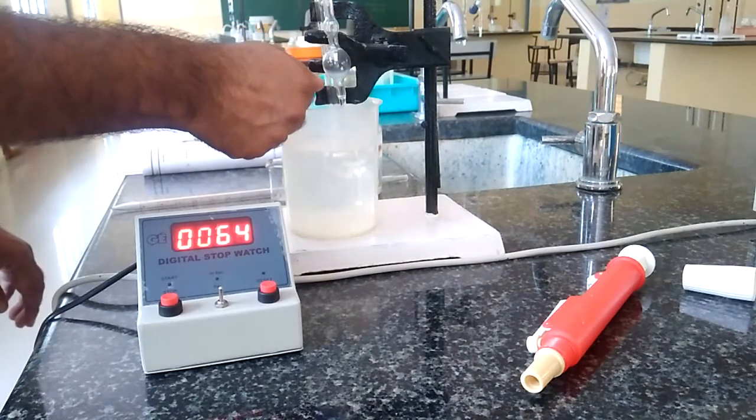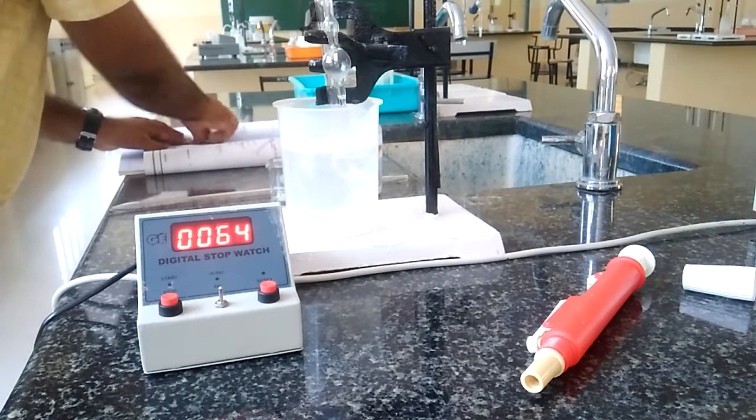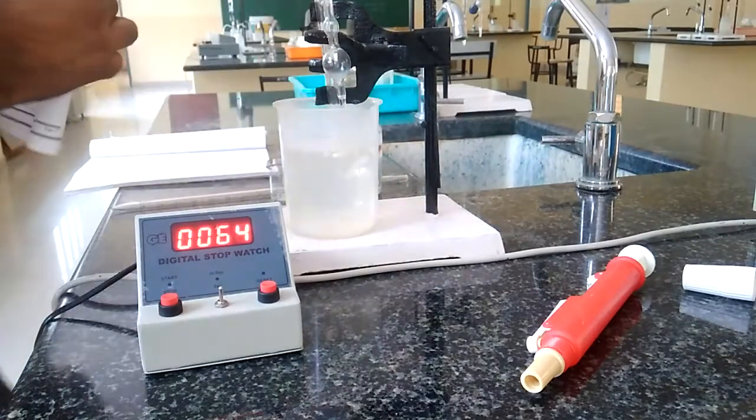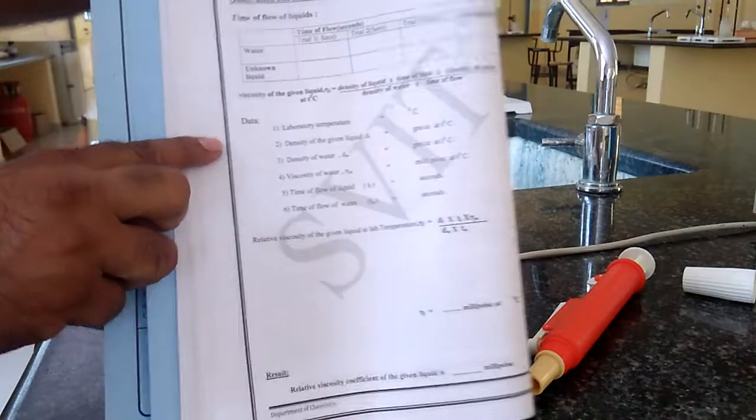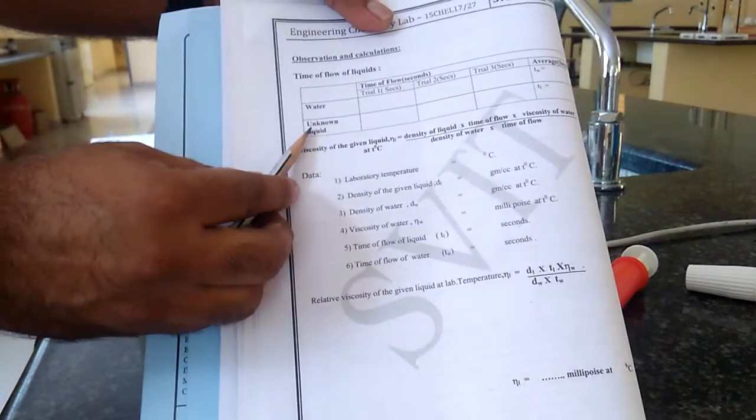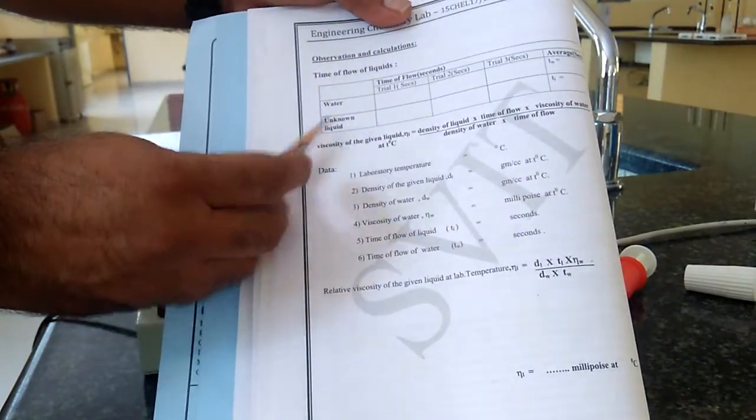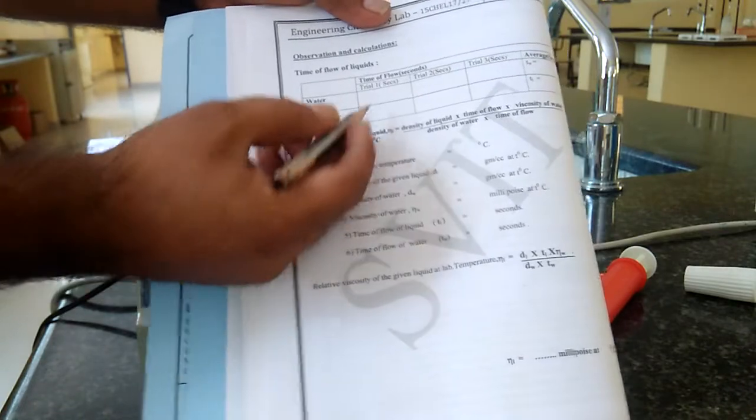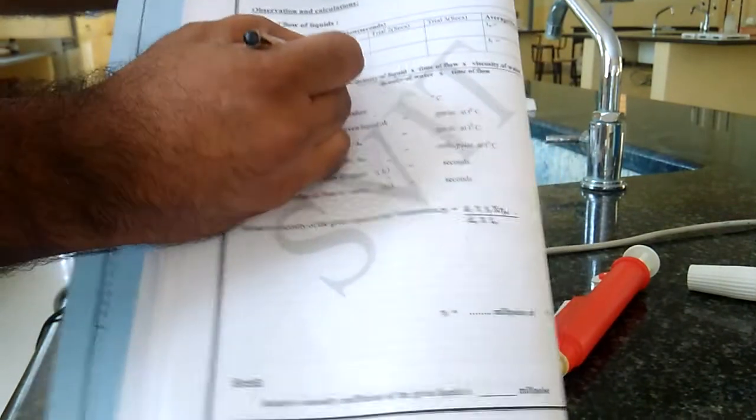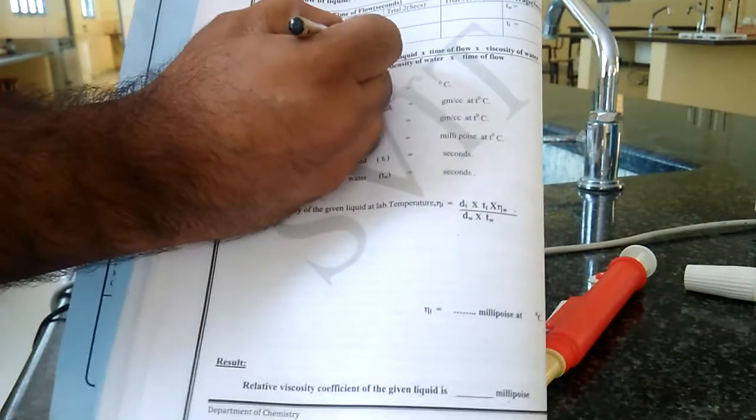This we have to record in the tabular column. This is the tabular column for the experiment. For the viscosity of our unknown liquid, first trial, it took around 64 seconds.